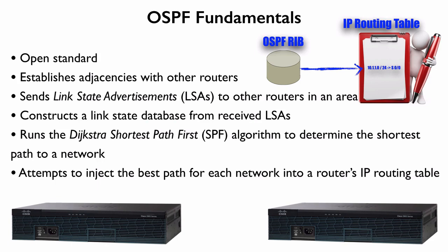For example, if EIGRP says here's how to get to the 10.1.1.0/24 network, and OSPF also says here's how to get to the 10.1.1.0/24 network, then based on administrative distance, EIGRP would be more believable. EIGRP has an administrative distance of 90, while OSPF has an administrative distance of 110. So just because a route exists in the OSPF RIB, it's not guaranteed to be injected into the IP routing table — that route is only a candidate.